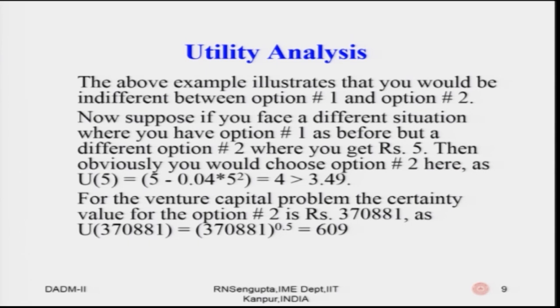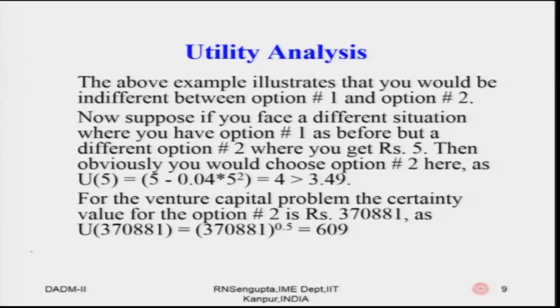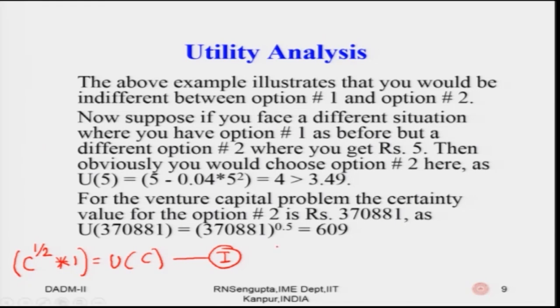Coming back to the venture capital case: the utility function was U(W) = W to the power half. The expected utility for the non-deterministic event was (10 lakhs)^0.5 × 0.2 + (5 lakhs)^0.5 × 0.4 + (1 lakh)^0.5 × 0.4. The certainty value C gives U(C) = C^0.5 × 1 (Equation 1). We equate Equations 1 and 2 to find C.